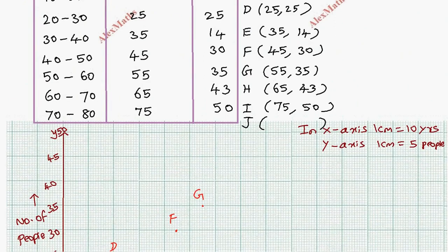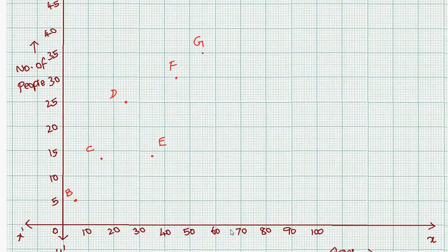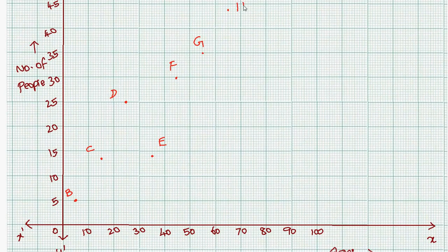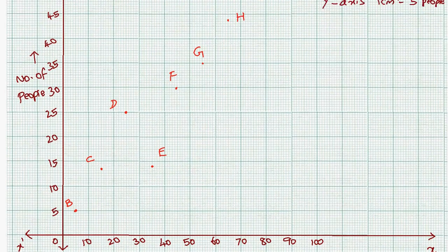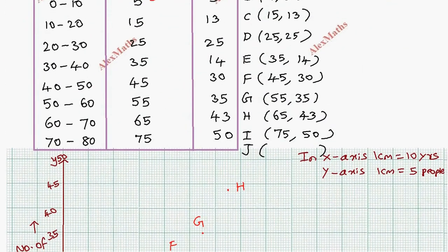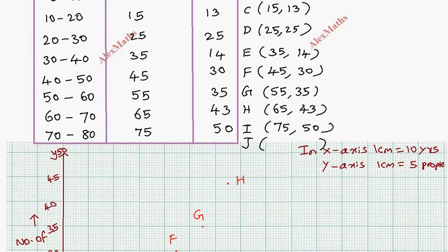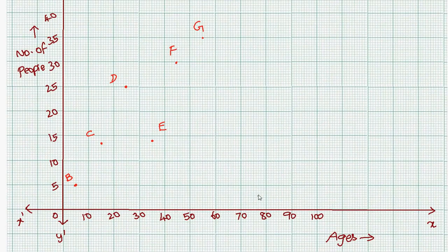Point H is at coordinates (65, 43) — the midpoint 65 corresponds to frequency 43. Point G-H confirms 65 is 43. Then point G-H for the next group is at (75, 50) — midpoint 75 corresponds to frequency 50.